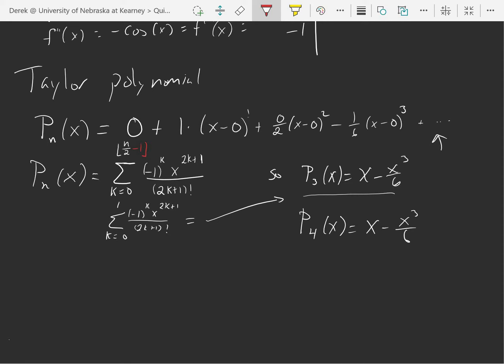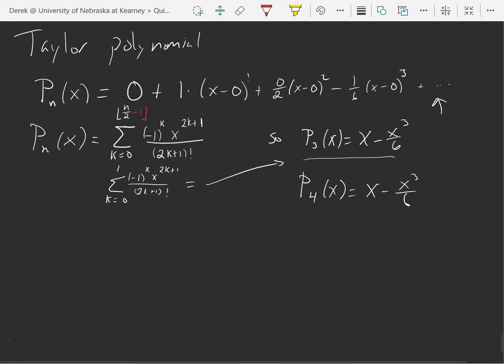Okay, that was just getting those indexes right. That wasn't really anything that's going to bother us with our approximations, but our indexes are right now for this Taylor polynomial for the sine function.